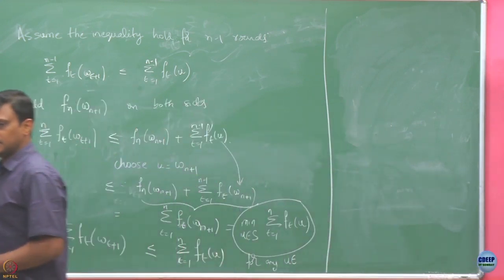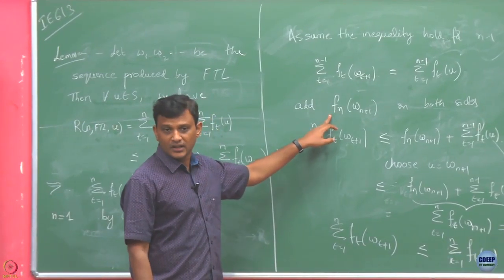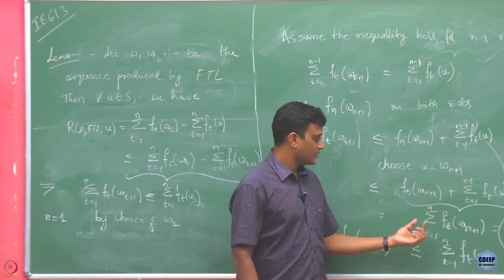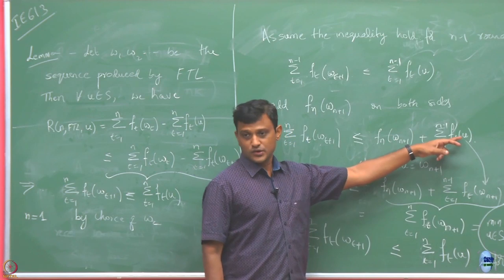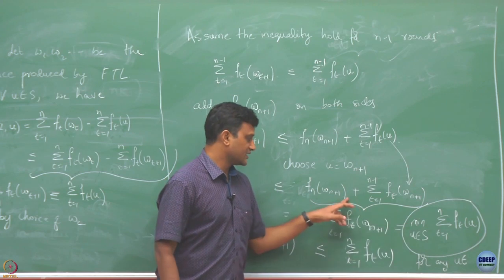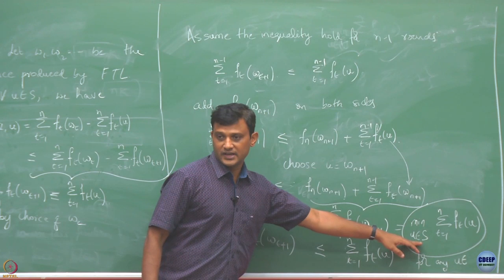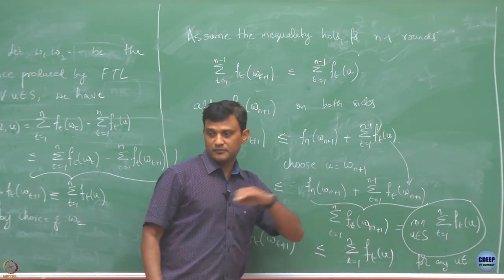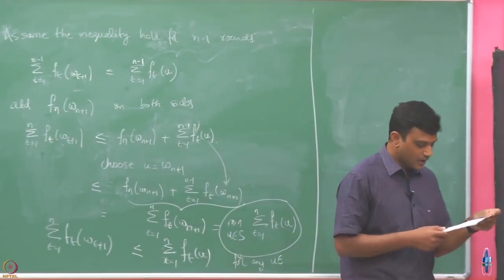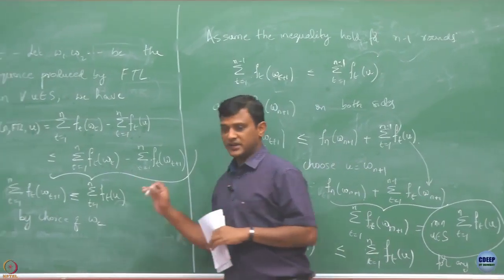The only trick we used here is that after adding this, by choosing U in a specific fashion — namely as W_{n+1} coming from minimizing all previous n F_T functions — we established this bound. Good. We have this bound expressed in this form now.